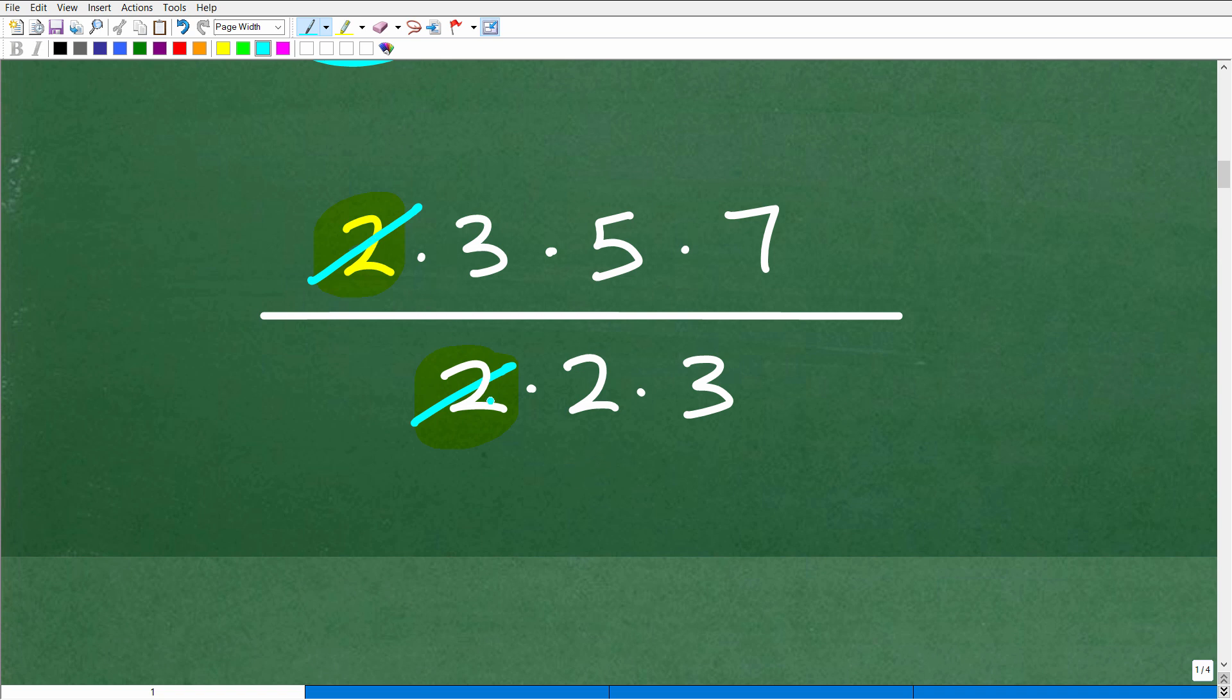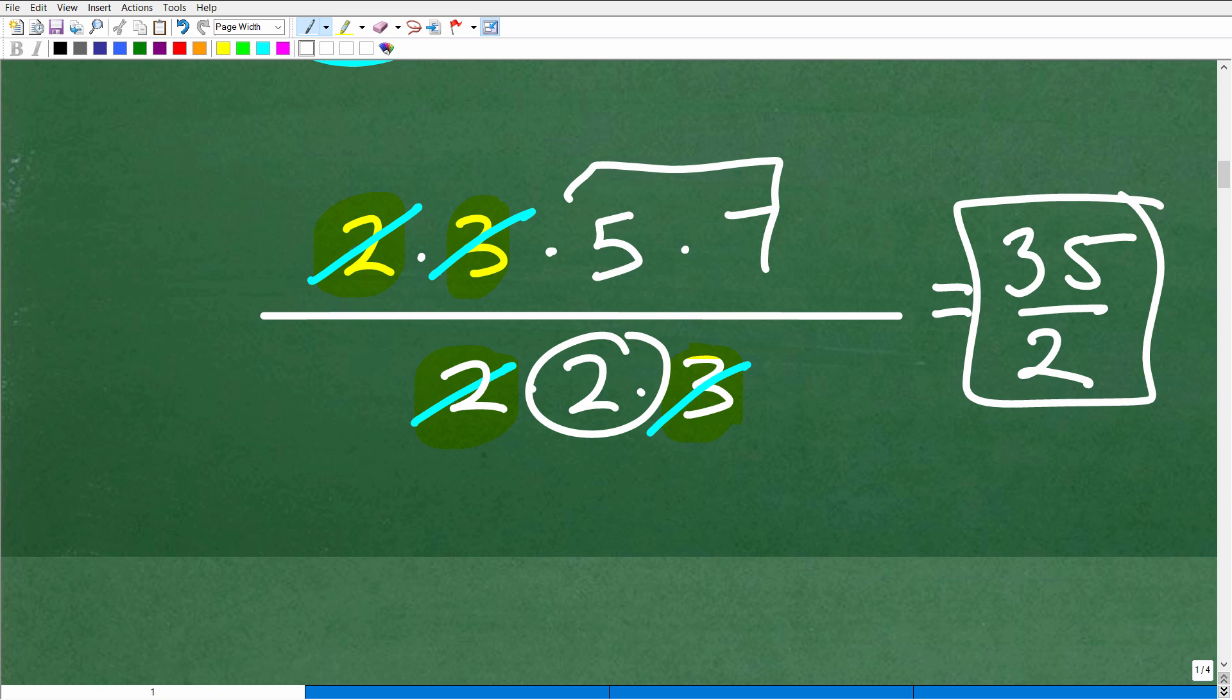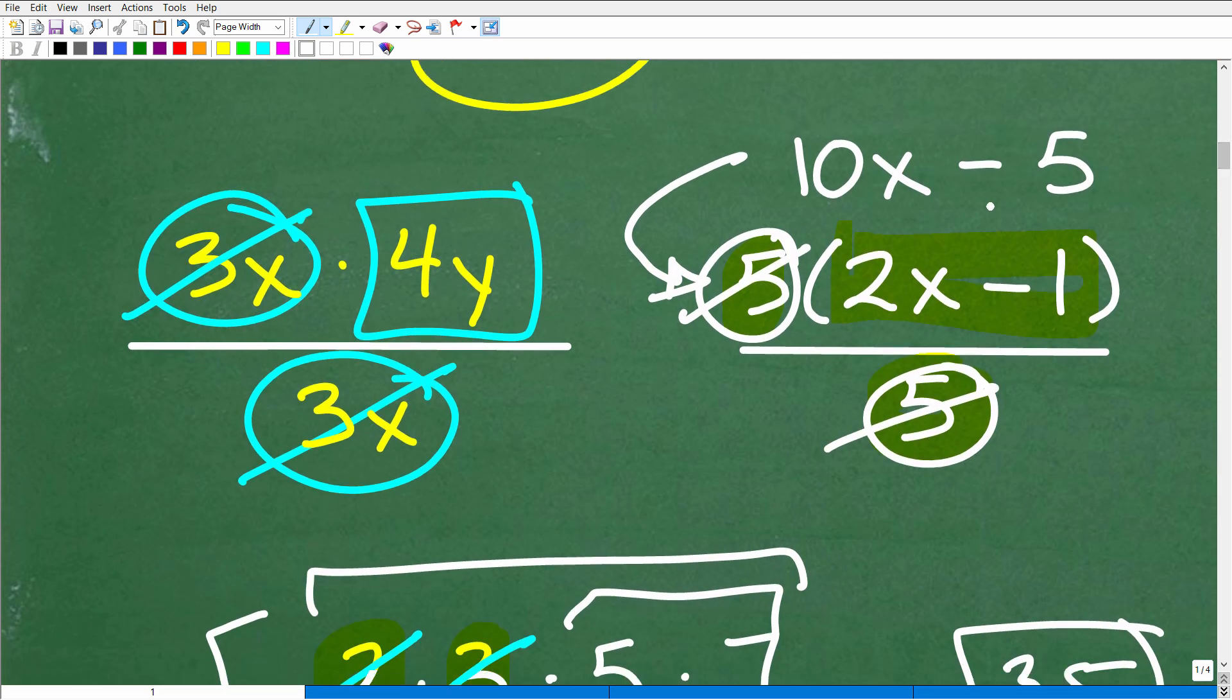So here I can cross cancel - this 2 can cross cancel that 2. Here I have a 3, oh I have a 3 right there. So I can cross cancel 3 for 3. I have a 5 and a 7, and I don't have any 5s or 7s in the denominator. So the simplified result would be 5 times 7, which is 35, over this 2 that remains. This is effectively what you do when simplifying or reducing a fraction. You want to factor the numerator and denominator and cross cancel like factors. But we do the same thing in algebra as well. That's why factoring is one of the most important skills you need to know in algebra.